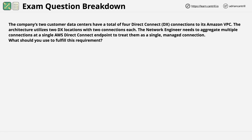The question is: a company's two customer data centers have a total of four Direct Connect connections to its Amazon VPC. The architecture utilizes two DX locations with two connections in each. The network engineer needs to aggregate multiple connections at a single AWS Direct Connect endpoint to treat them as a single managed connection. What should you use to fulfill this requirement?